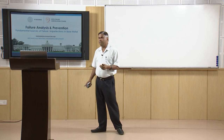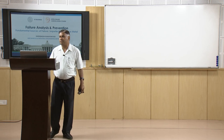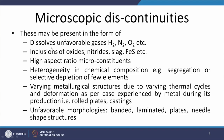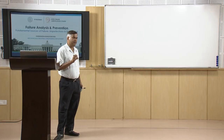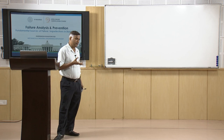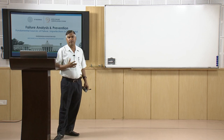We will discuss certain microscopic discontinuities which frequently become the cause of failure. These may be in the form of dissolved gases in the base metal — hydrogen, nitrogen, and oxygen. These gases will either form their oxides, nitrides, or hydrides, act as pores, or in the case of hydrogen in steels, act as a source of cold cracking or delayed cracking.